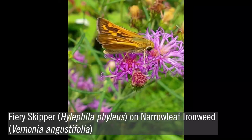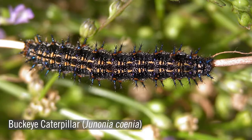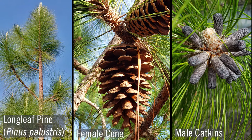Longleaf ground cover offers pollen, nectar, larval host plants, and nest sites for bees, butterflies, monarchs, and many other beneficial insects, many of which are experiencing population declines. Learning to identify the plant species we're going to show will help landowners monitor project successes. Contact the staff at your nearest USDA service center for more details.